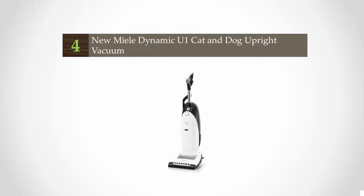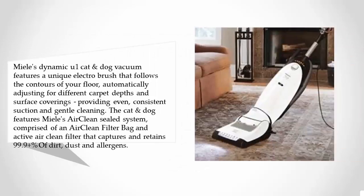At number 4, Miele's Dynamic U1 Cat and Dog vacuum features a unique electro brush that follows the contours of your floor, automatically adjusting for different carpet depths and surface coverings, providing even consistent suction and gentle cleaning.